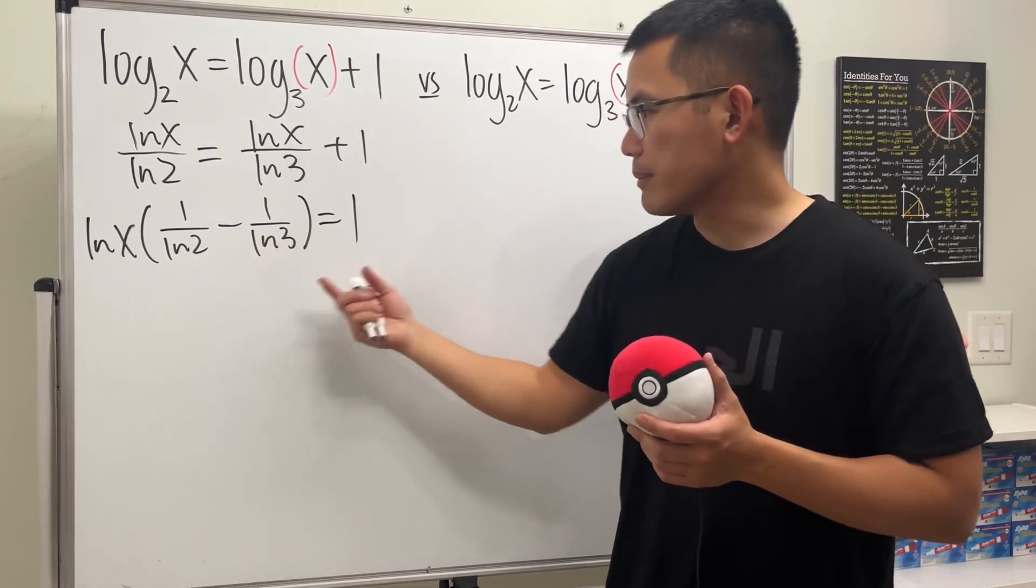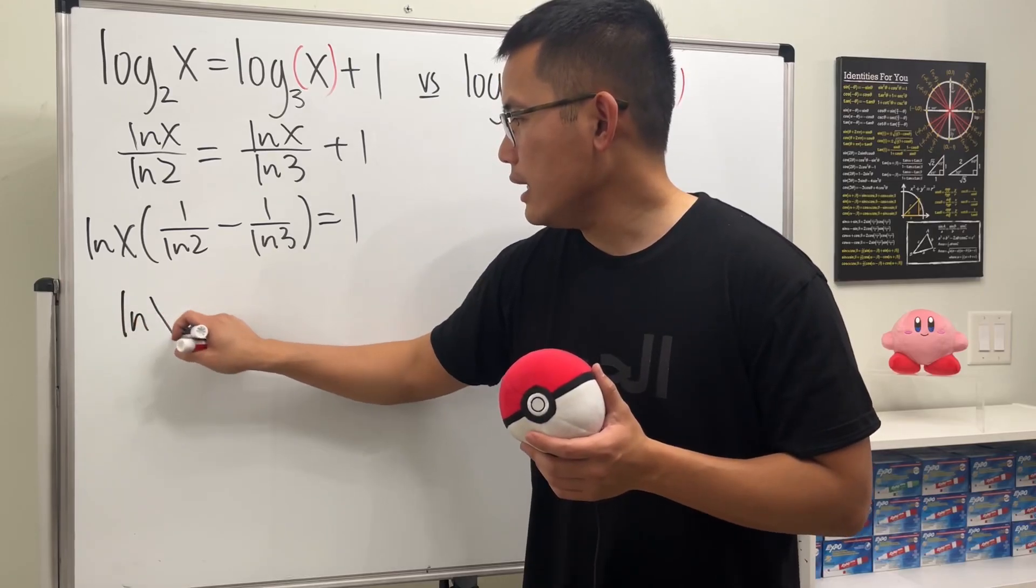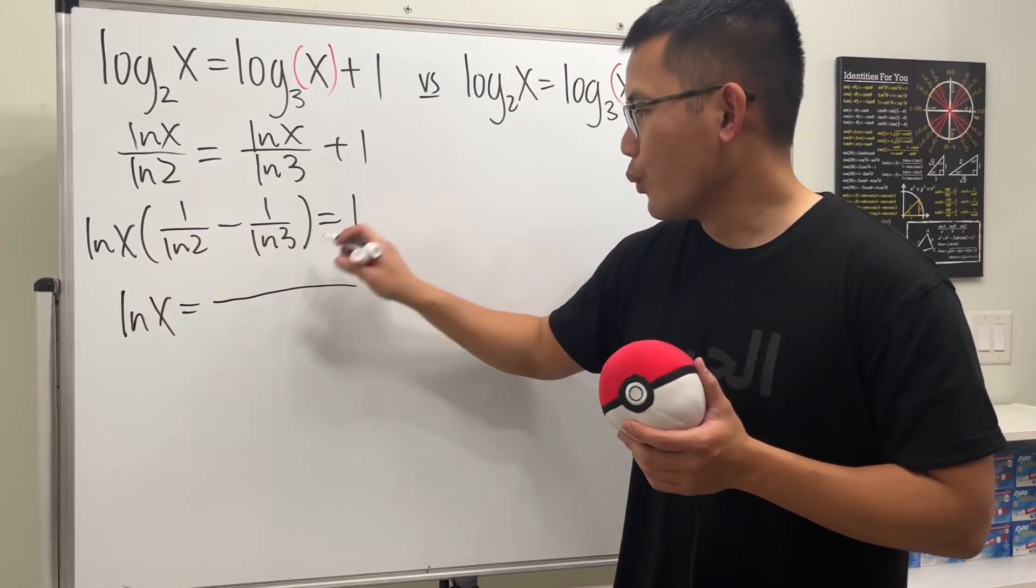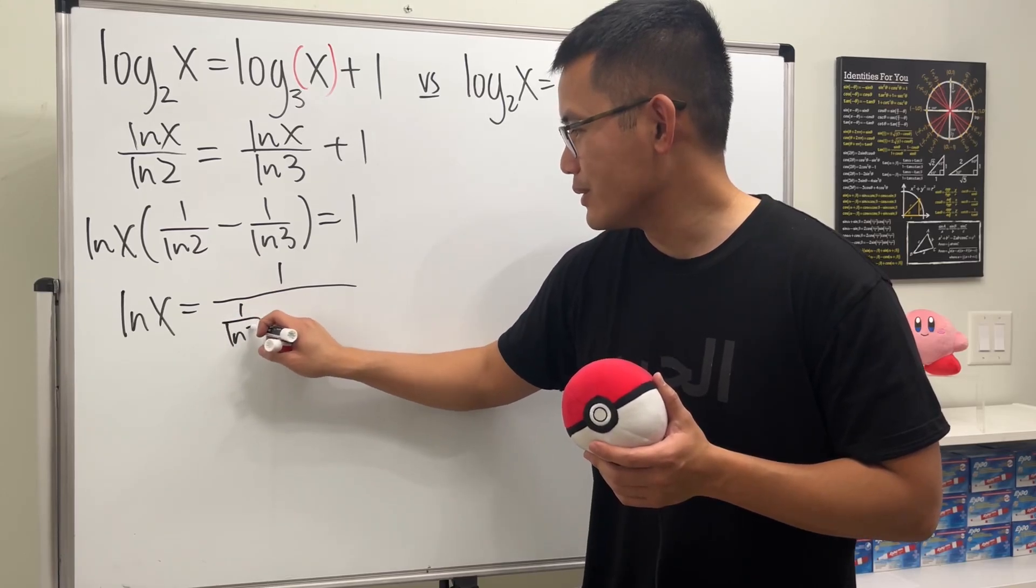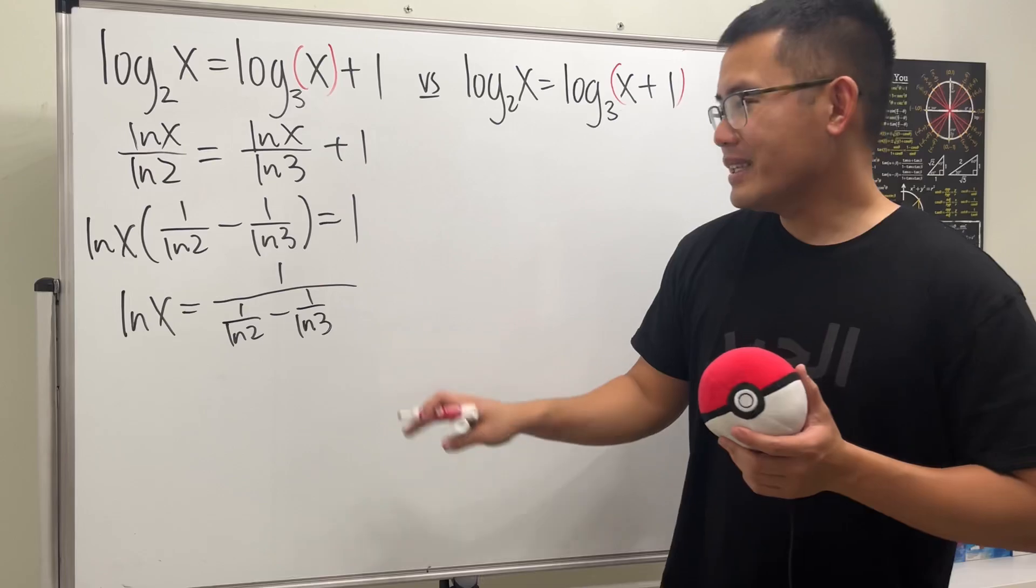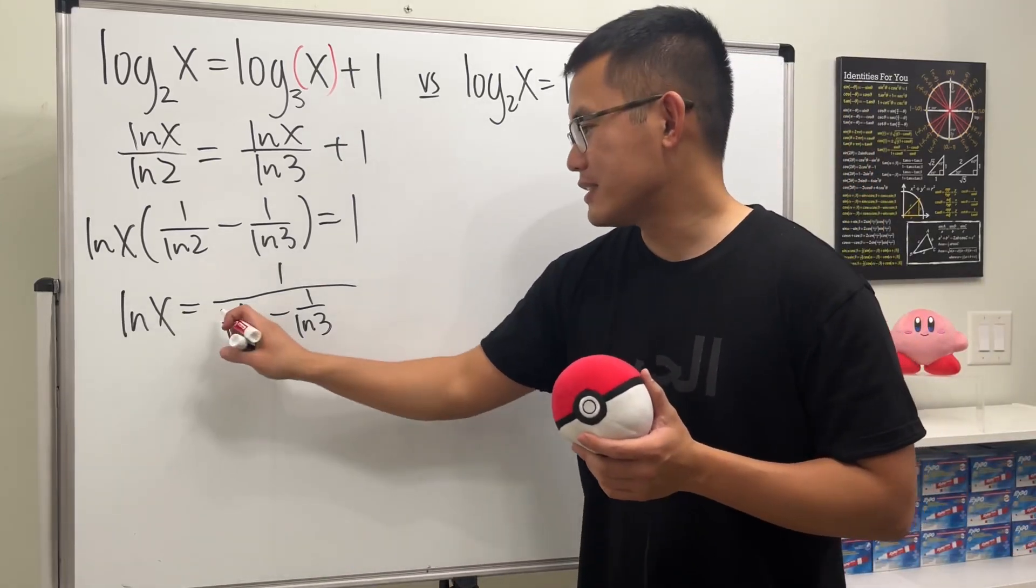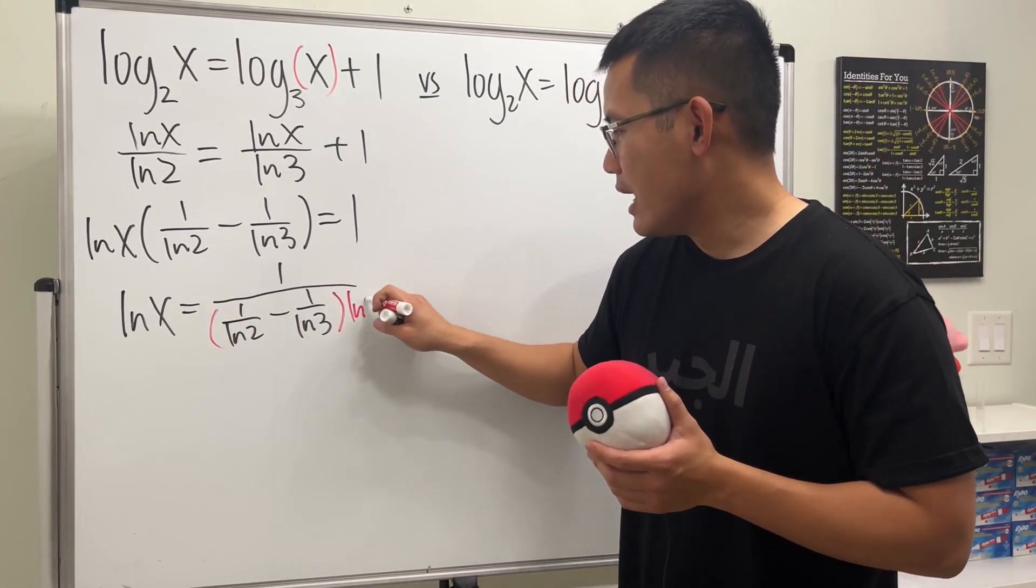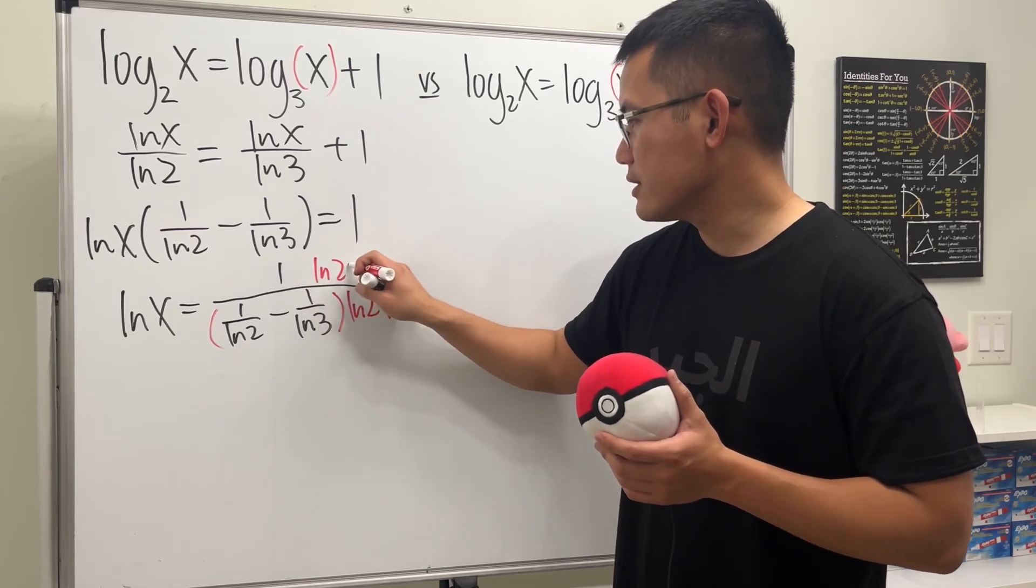Then we can just divide this on both sides. So we get ln x being equal to 1 over that, which is 1 over ln 2, minus 1 over ln 3. And right here, we have a little complex fraction. So let's just multiply the top and bottom by ln 2 and also ln 3, like so.